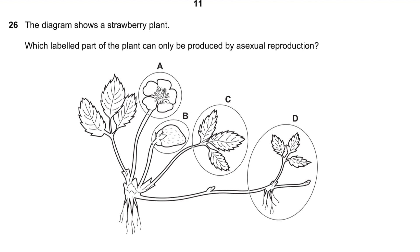Question 26: The diagram shows a strawberry plant. Which labeled part can be produced by asexual reproduction? The answer is D — not the flower (sexual), not the fruit (sexual), not just a leaf. The structure D has a leaf, stem, and roots, so it can be produced by asexual reproduction.